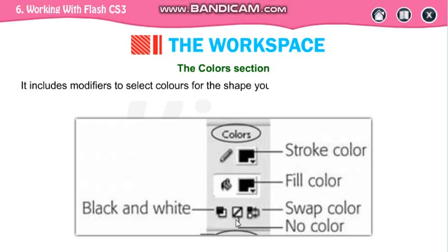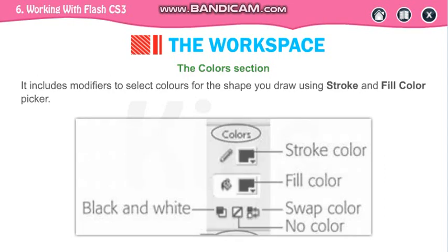This part is your vision local. So these are the options available in your color section. It includes the modifiers to select colors for the shapes you draw using your stroke and fill color.